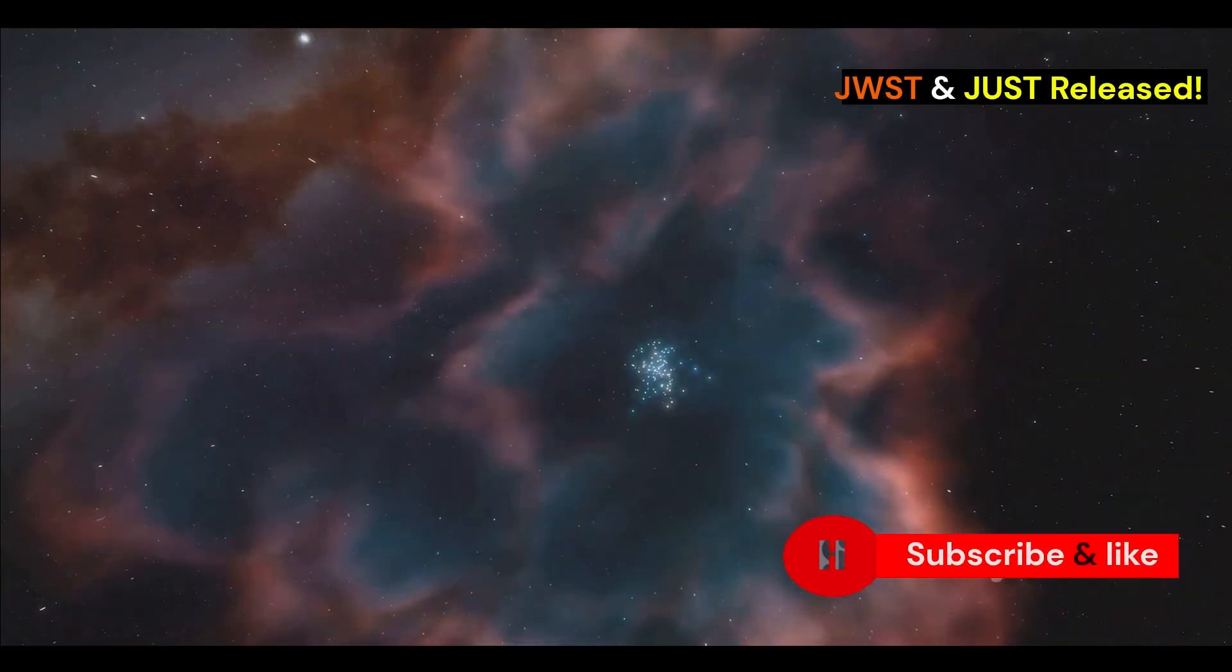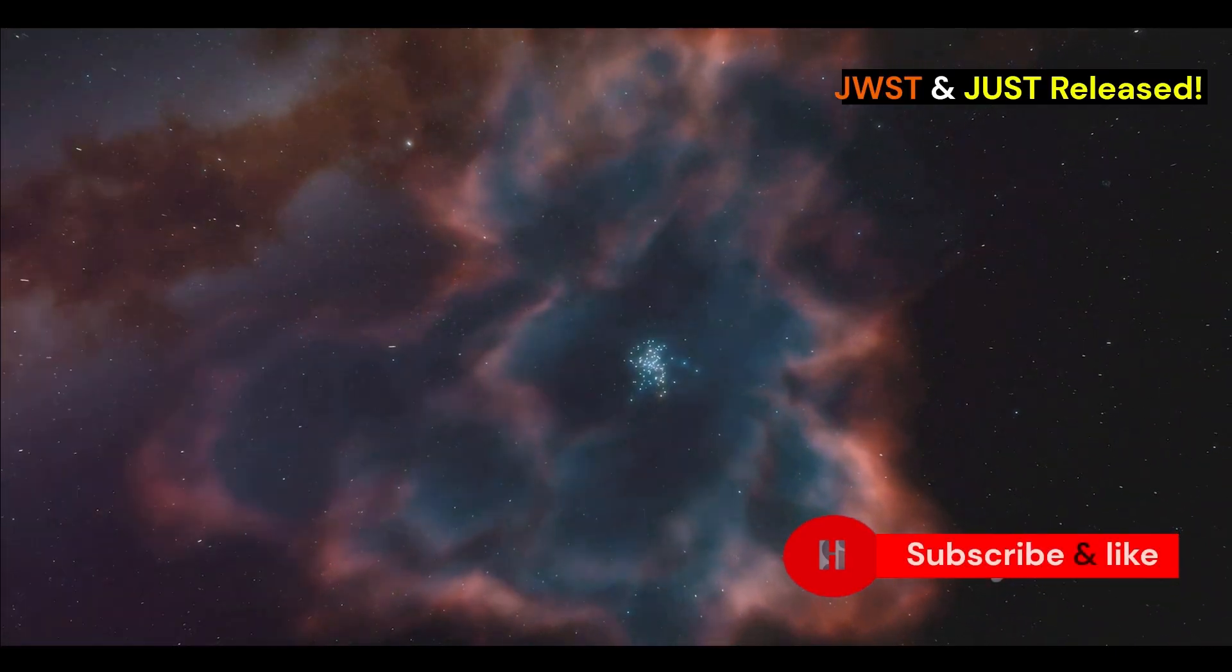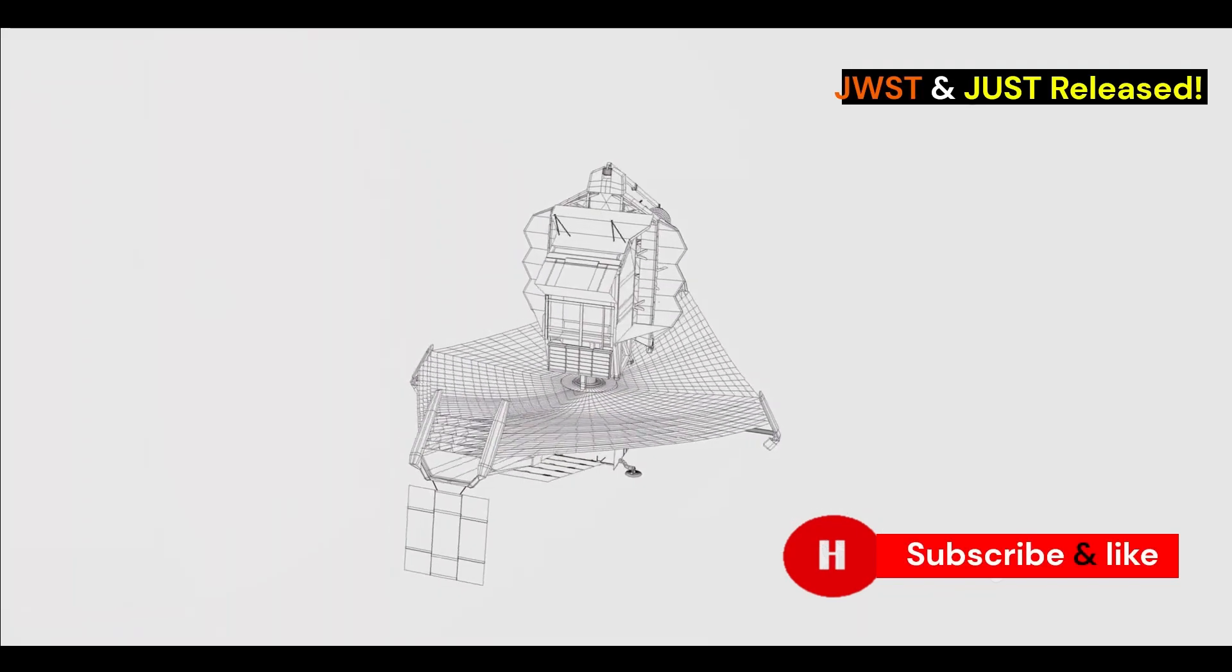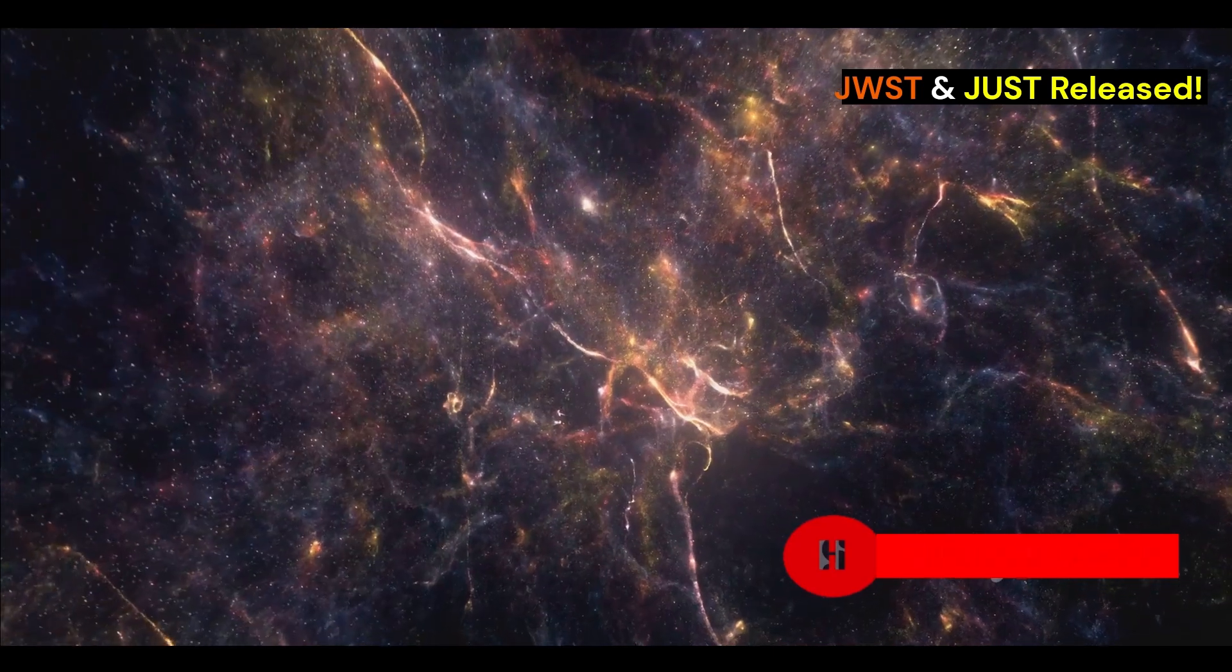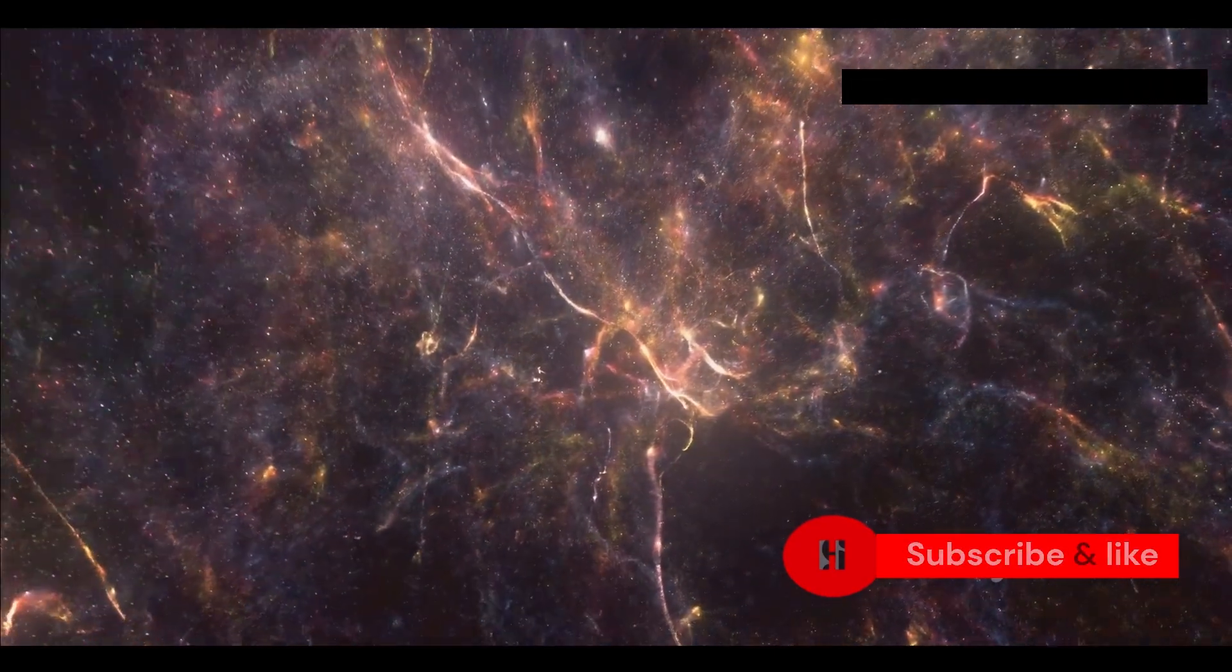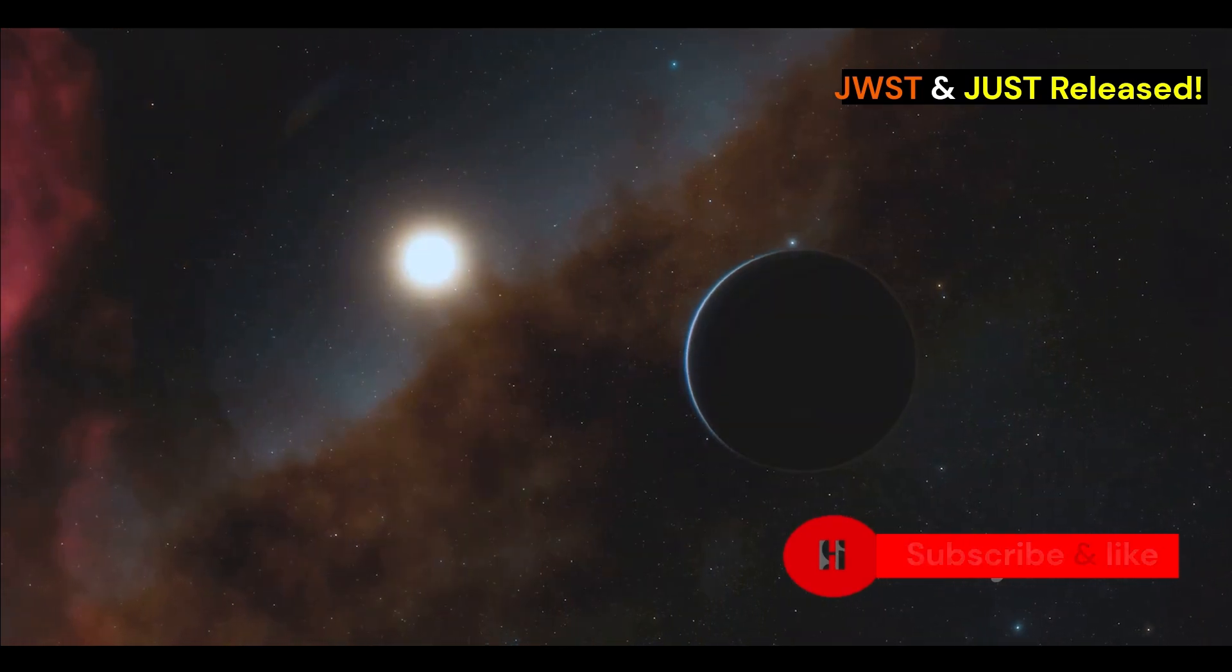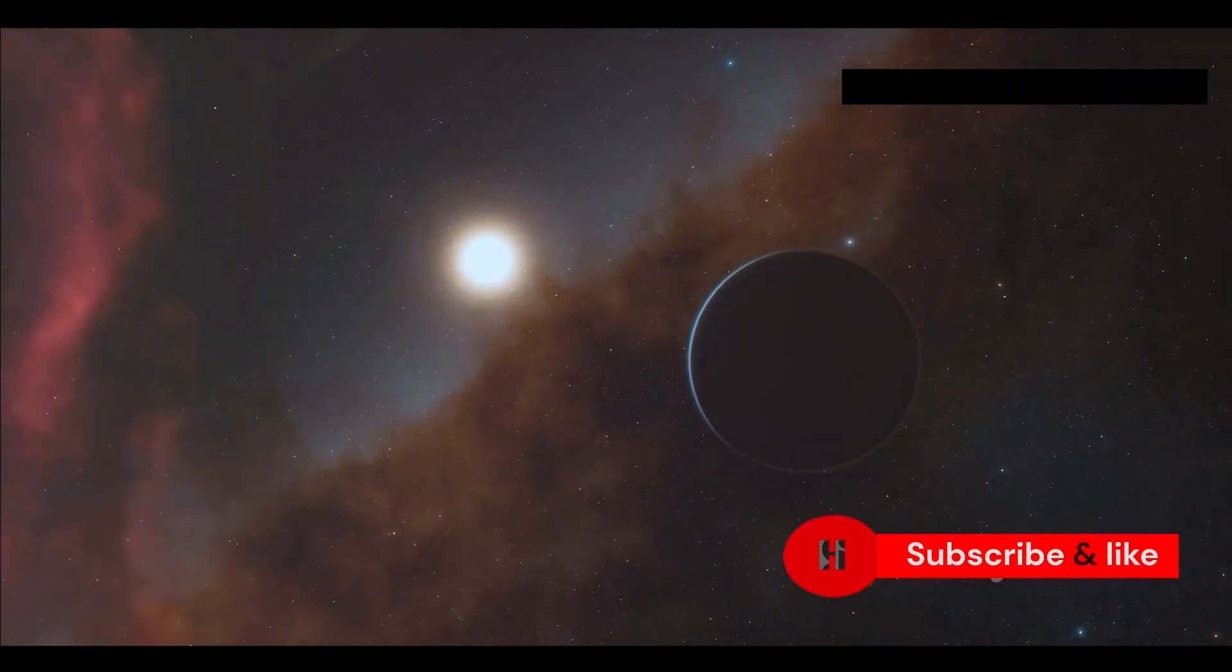JWST's infrared vision lets it see the universe in a way that was impossible before. Many things in space give off most of their light as infrared light. These things include cool stars, planets and clouds of gas and dust.